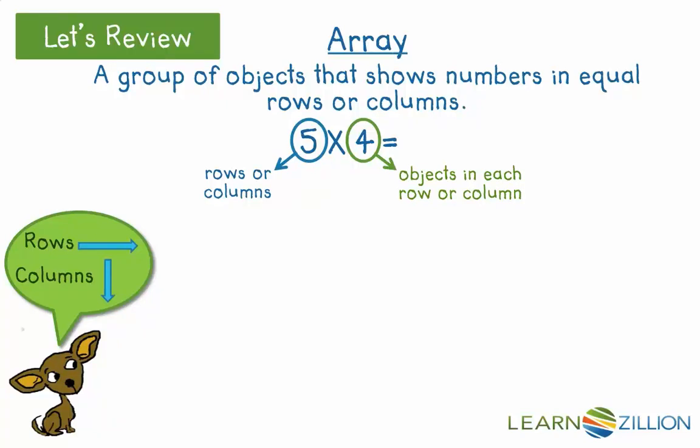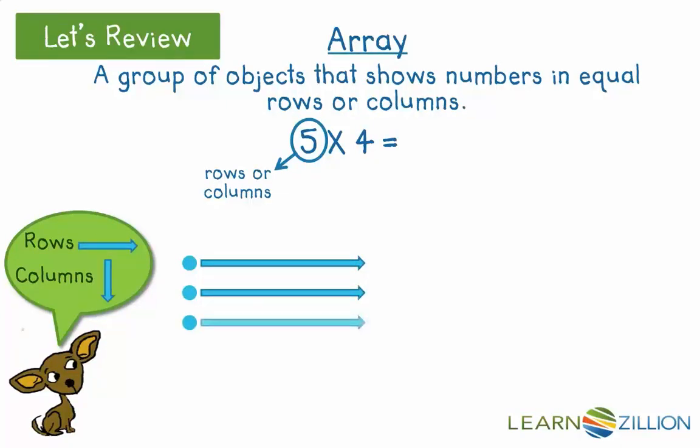Let's start building an array. We'll start with 5 rows: 1, 2, 3, 4, 5. We drew dots, but you could use anything—stars, smiley faces, squares, x's.